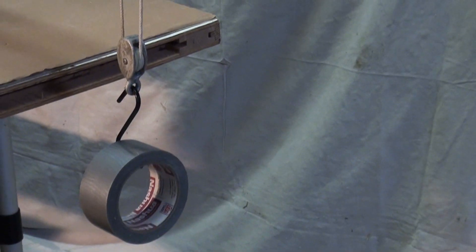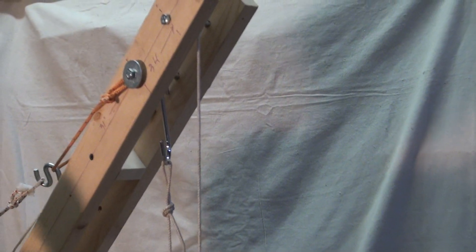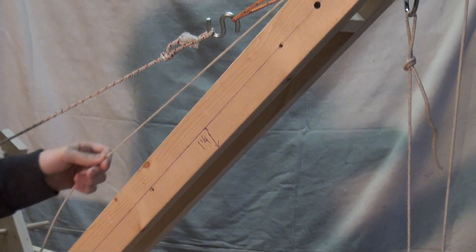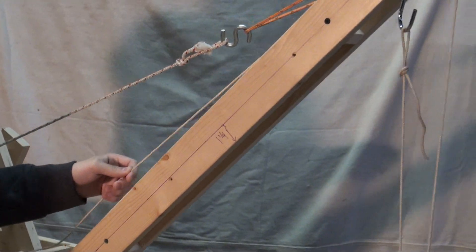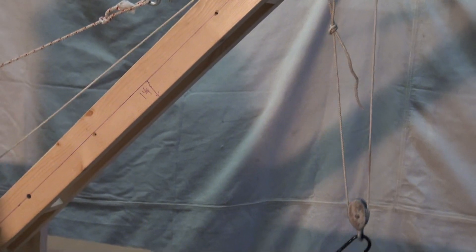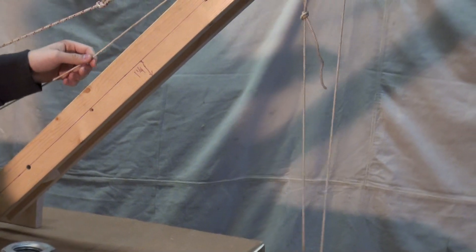So, if we had a 100-pound load, 50 pounds is being held up by the boom. And the other 50 pounds is there. So, you've got a mechanical advantage of two. So, just by adding that pulley, we've cut the effort needed in half.